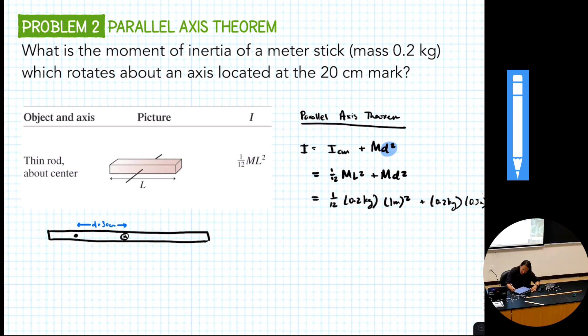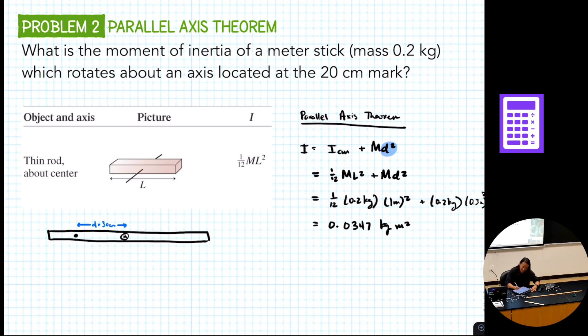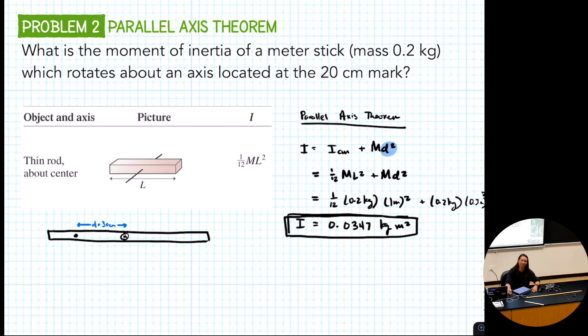You plug all that in and you get something that doesn't mean a whole lot to you because you're probably not used to looking at moments of inertia, but it's 0.0347 kilograms meters squared, a very nice unit that makes tons of sense to people. Very intuitive. That's sarcasm. But that's our answer. We're just plugging stuff in and this is what we get. What are those units? Kilograms meters squared. Those are the units of moment of inertia. Rotational units are the worst. Until we get to torque, which is Newton meters, but not joules. Yeah. It's because of directionality. Any questions on this? It's pretty much just plug and play. Just don't mess up the D. This is the main thing, and know which moment of inertia you're starting from.